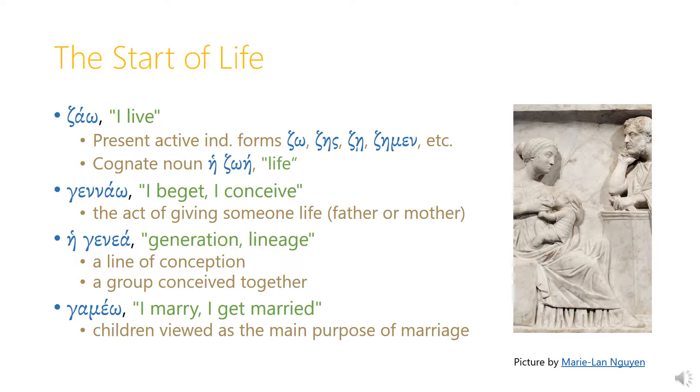So dzao, then dzais meaning 'you live,' and dzai with an iota subscript meaning 'he, she, or it lives.'